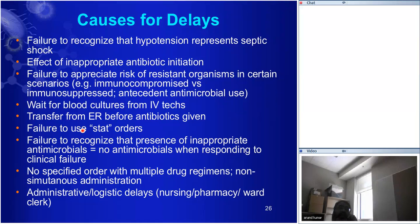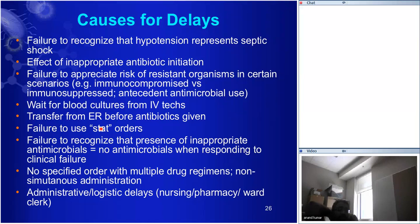Failure to use stat orders will delay things by about two hours. If you don't use stat orders and wait for the routine schedule — say ciprofloxacin is ordered at 400mg Q12 hours, and the patient comes in at 11 a.m. but standard times are 10 a.m. and 10 p.m. — they wait 11 hours. Just by doing that, you've killed that patient. A colleague Peter Brindley in Edmonton showed that about 3–4% of the time this was happening, even in a well-run ICU.